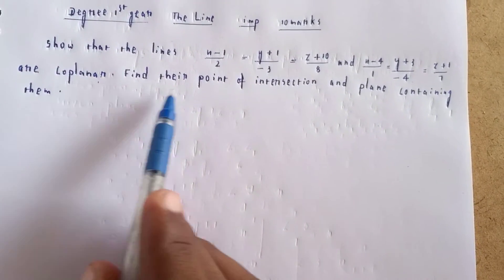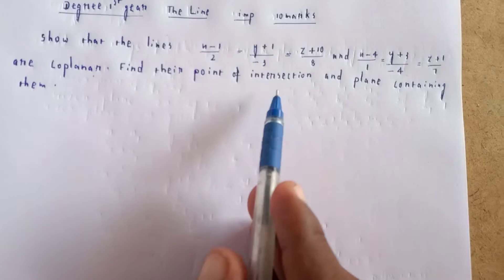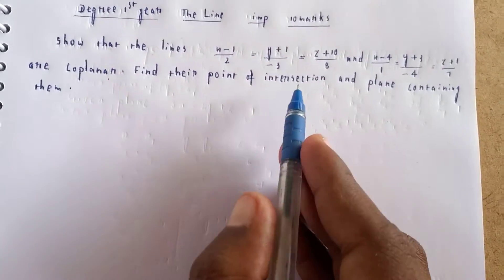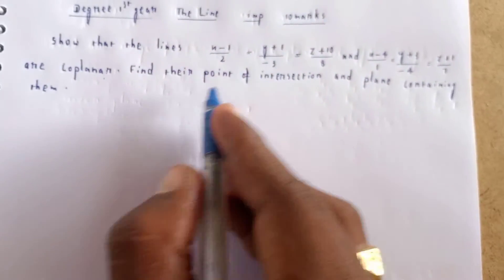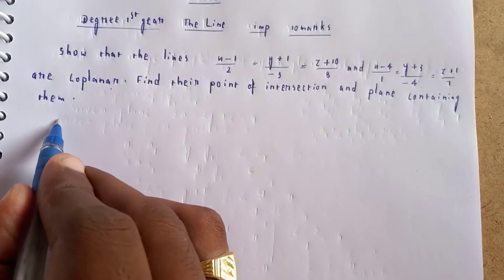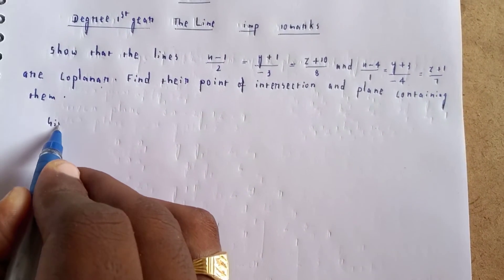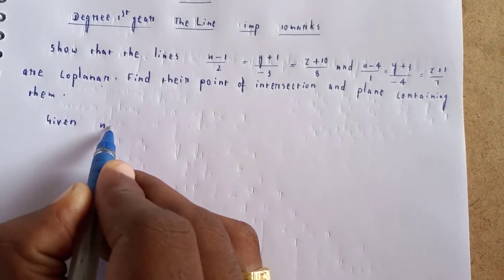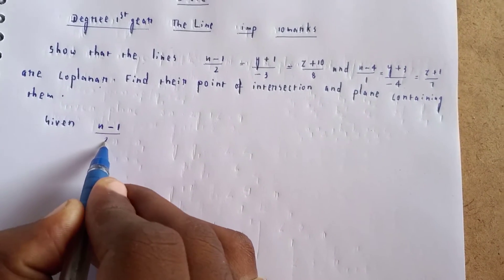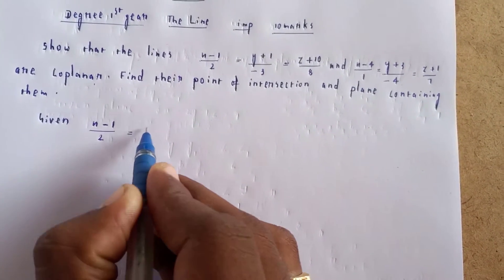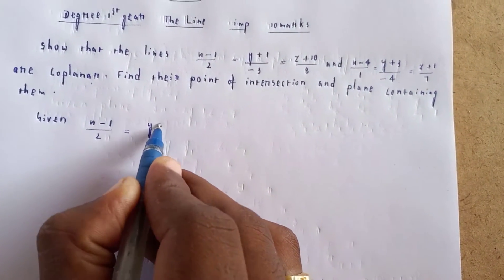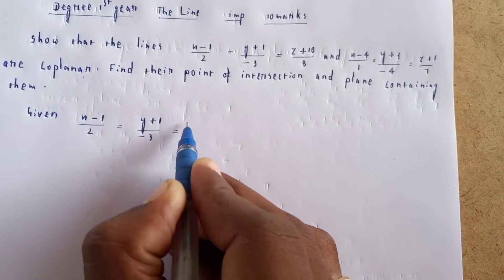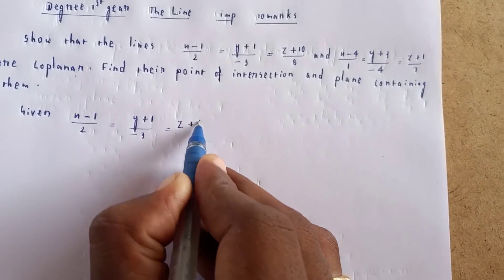First, show them the given lines are coplanar. Given Line 1: (x−1)/2 = (y+1)/(−3) = (z+10)/8. We need to first show coplanarity, then find the point of intersection.